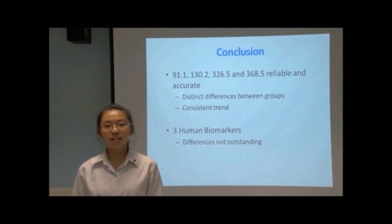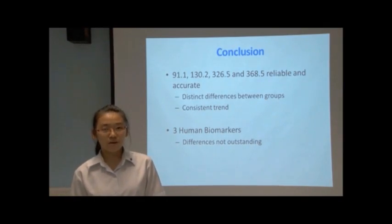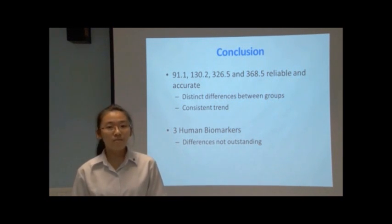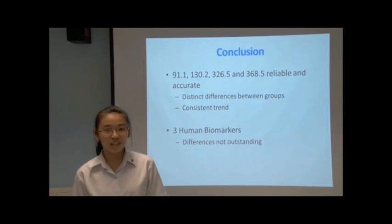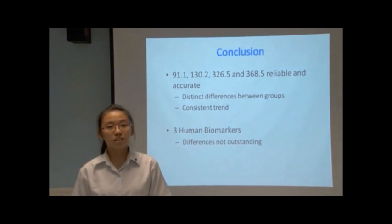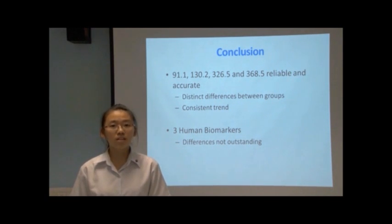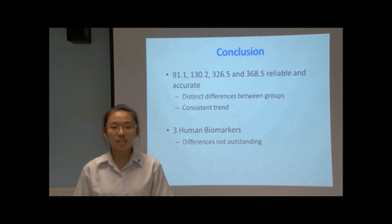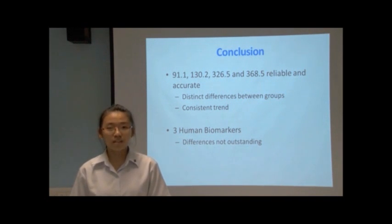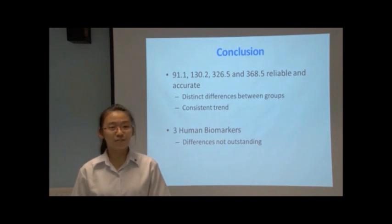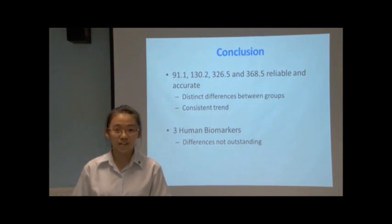In conclusion, we managed to identify four age biomarkers and three human biomarkers. Biomarkers at 91.1 and 326.5 m/z are found in high concentrations for children aged 10 and under, that is group A. Biomarkers at 130.2 and 368.5 m/z can be used to identify all age groups. The three human biomarkers generally show a decreasing trend with increasing age; however, this difference is not significant enough to be considered an age biomarker.